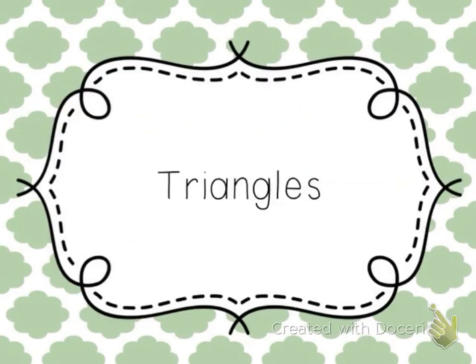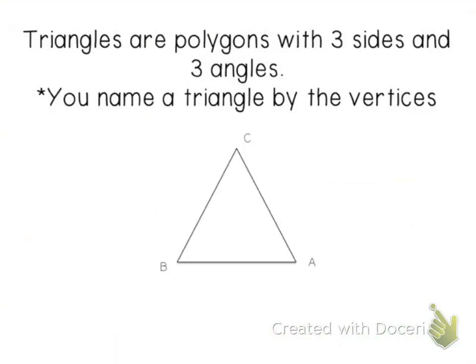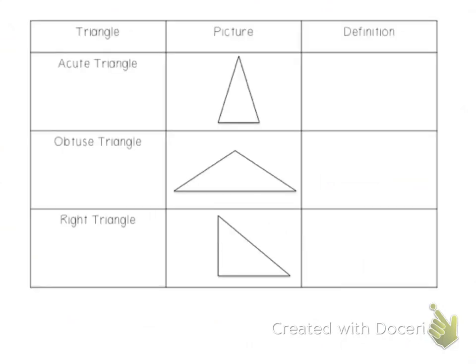Next we're going to look at some triangles and different types of triangles. Triangles are polygons with three sides and three angles. You name a triangle by its vertices — so we would call this triangle ABC, or CBA, or BCA. There are three types of triangles: acute, obtuse, and right. You may notice these have the same names as the angles we learned about earlier.